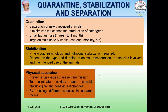Physical separation is also required between animals. This physical separation prevents interspecies disease transmission when animals are procured from another species. It also eliminates anxiety and physiological and behavioral changes which develop in different animals. This can be carried out by housing different species in separate rooms. In the animal house, you have to develop a separate room for rats, a separate room for mice, a separate room for rabbits, so that there are no anxiety or physiological or behavioral changes observed. This is called physical separation.